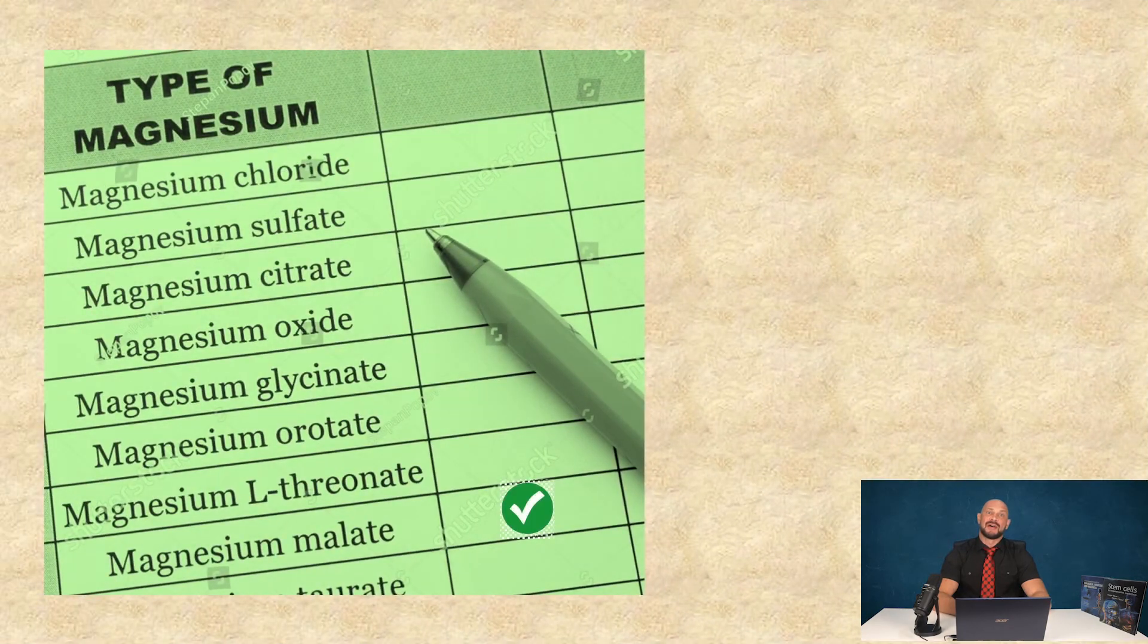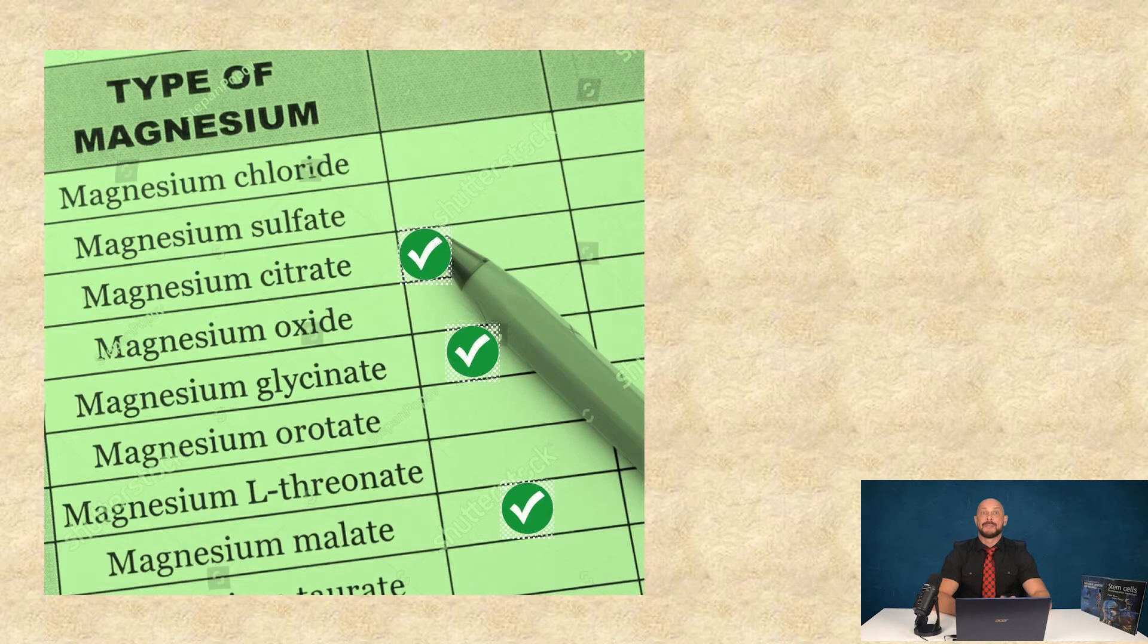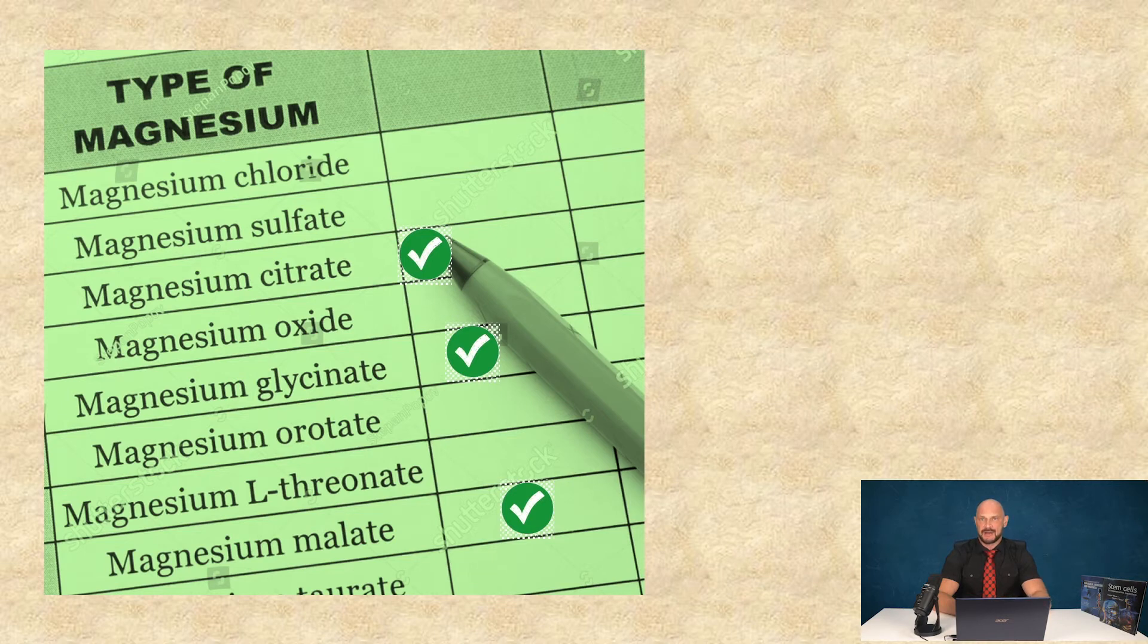Among the variety of different forms of magnesium, magnesium malate and glycinate have best absorption rate followed by citrate and others.